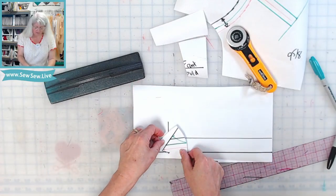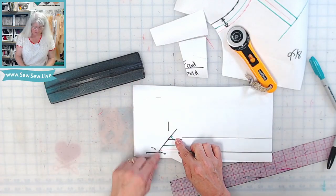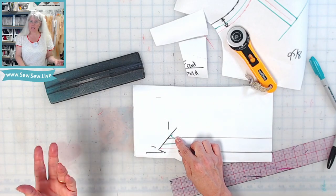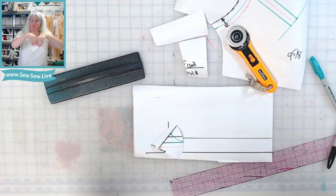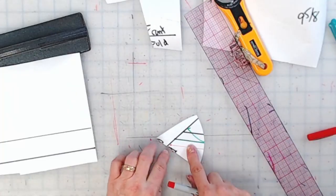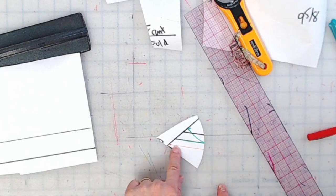So right now, what we're trying to do is determine this little point right here, because we want to make sure that we get that angle, right? So that when it's sewn right there, it's not going to buckle out or be too short.